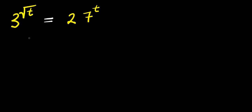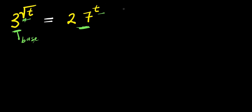How many of you can solve this problem? We have 3 to the power of square root of t equals 27 to the power of t. Now there is a square root here, and here there is 27 and 3 as the base. So this is an exponential problem.